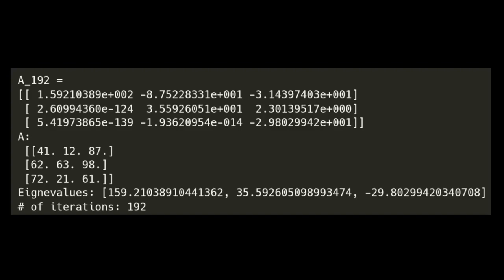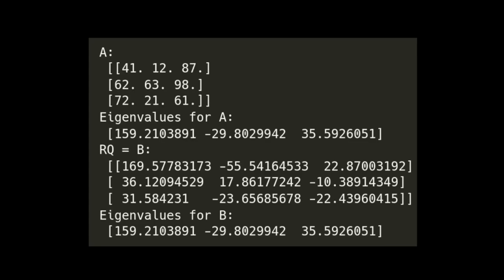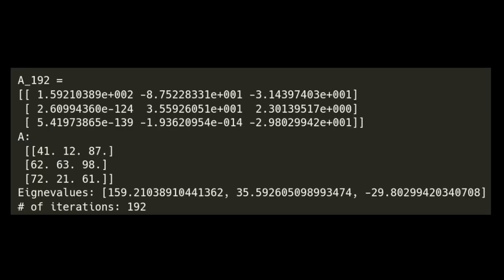And these are, of course, for that original A matrix, which going back to just using the numpy linalg eig function produced, and the QR algorithm that we've created here and just ran is producing that as well. But 192 iterations is quite a bit computationally intensive. And so there's actually a way for us to speed up the QR algorithm. And that will be the next method that we discuss.